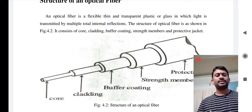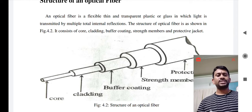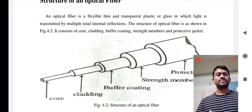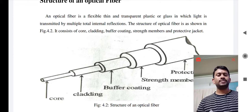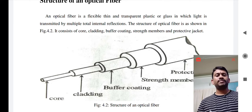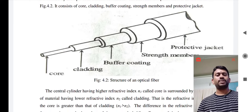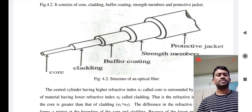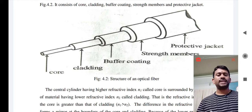The buffer coating is again protected by the strength members. These strength members allow the fiber to withstand forces during installation — generally stretching, rolling, and crunching may occur. In order to protect the optical fiber from damage, the strength members provide the necessary strength against rolling and stretching, which in turn is provided by the outer protective jacket. Generally, for the jacket, a steel or Kevlar material is used, and this particular material helps the optical fiber withstand against temperature changes and moisture.